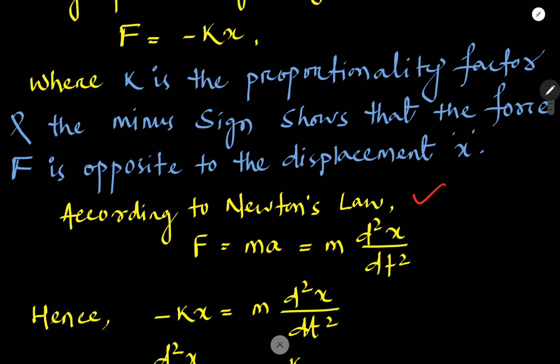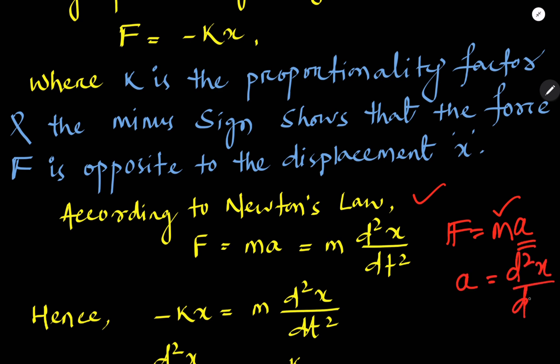According to Newton's second law, F equals MA, where M is the mass and A is the acceleration, which is the second derivative of displacement: d²x/dt². So our first equation is F equal to minus kx, and from Newton's second law, F equals M times d²x/dt².